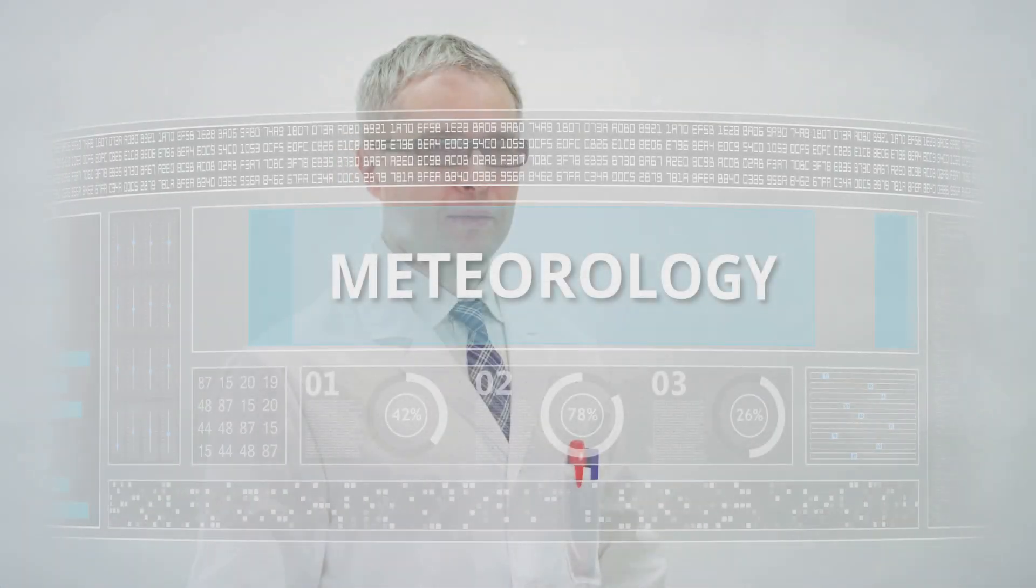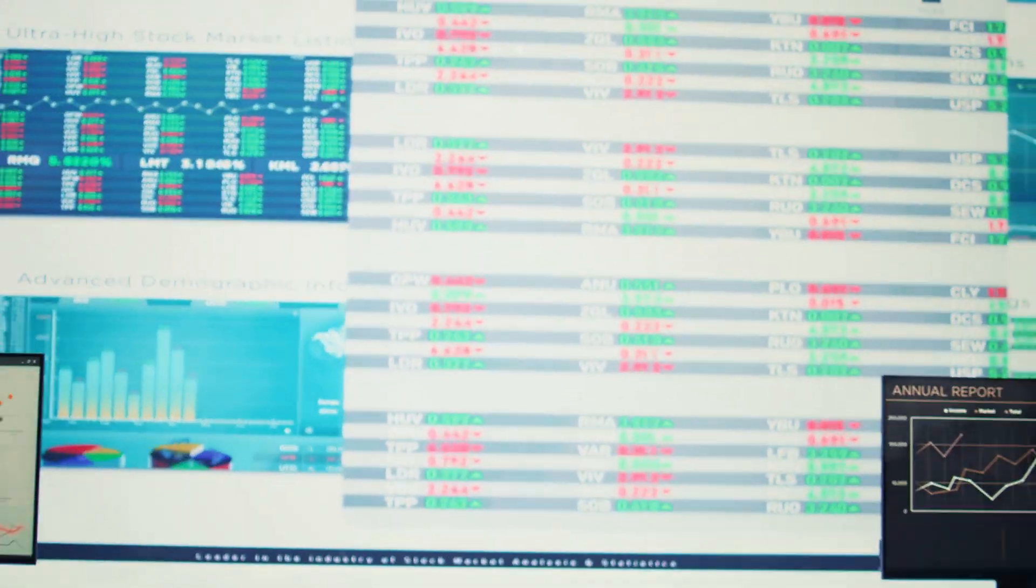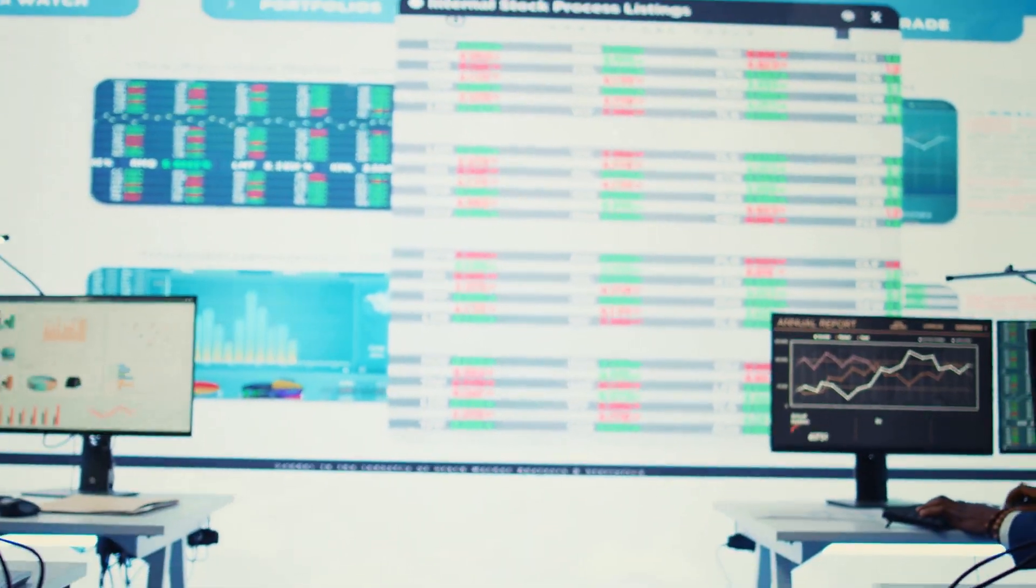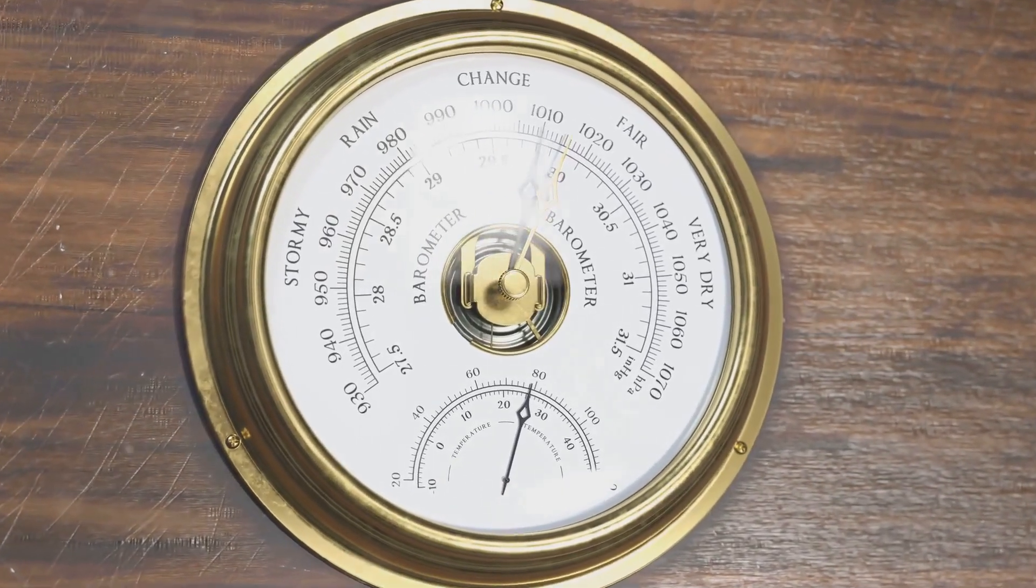All right, let's put everything together. Scientists called meteorologists use data from these weather instruments to make predictions. For example, if the barometer shows falling air pressure, they might predict a storm.